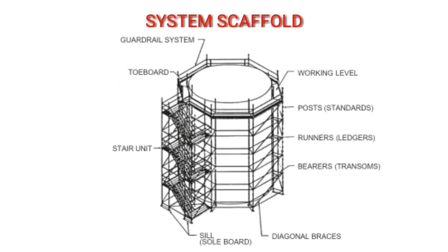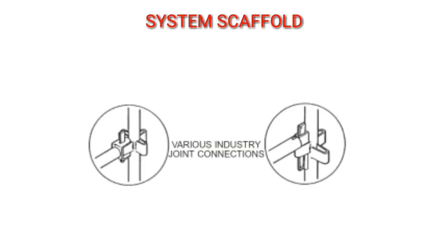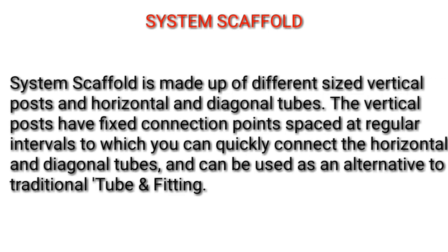System scaffold. A system scaffold is made up of different-sized vertical posts and horizontal and diagonal tubes. The vertical posts have fixed connection points spaced at regular intervals to which you can quickly connect the horizontal and diagonal tubes, and can be used as an alternative to traditional tube and fitting.